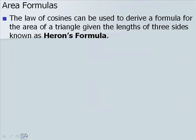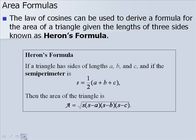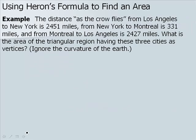Looking at area formulas, the Law of Cosines can be used to derive a formula for the area of a triangle given the lengths of three sides, known as Heron's formula. In Heron's formula, if a triangle has sides of lengths a, b, and c, and the semi-perimeter s equals one half the sum of all sides, then the area equals the square root of the semi-perimeter multiplied by the semi-perimeter minus each of the sides. Let's do an example.